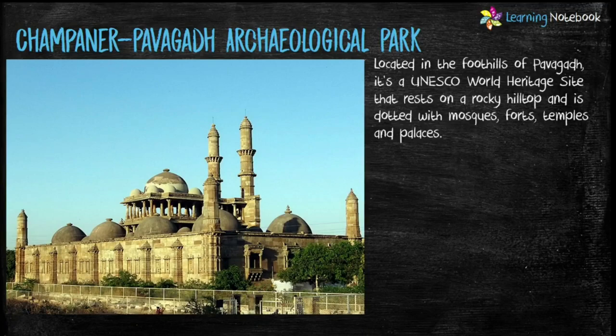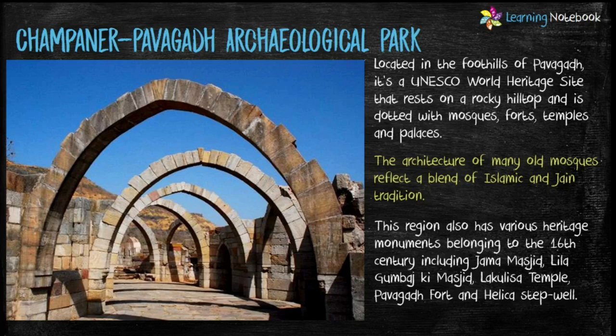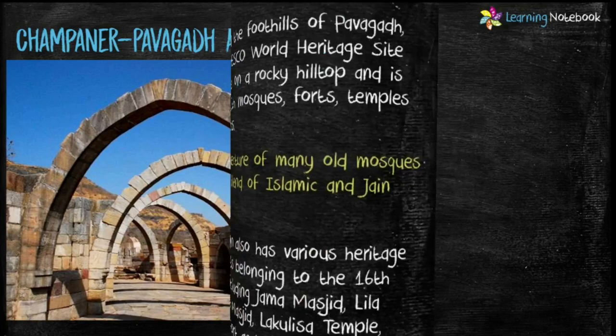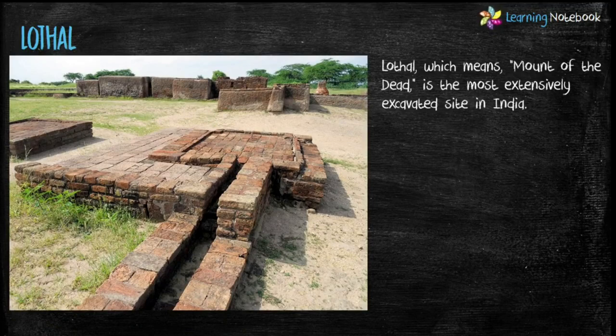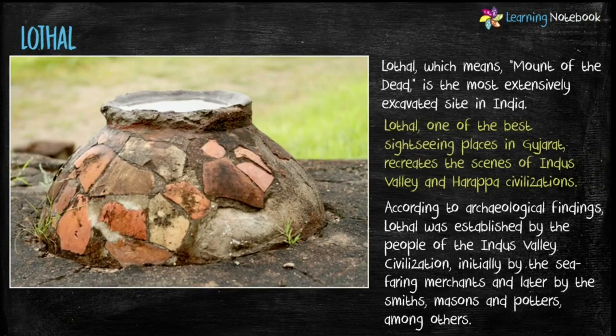Next heritage site is Champaner-Pavagadh Archaeological Park. Located in the foothills of Pavagadh, this UNESCO World Heritage Site rests on a rocky hilltop and is dotted with mosques, forts, temples and palaces. Next is Lothal, which means Mount of the Dead. It is the most extensively excavated site in India, recreating the scenes of the Indus Valley and Harappan civilizations.